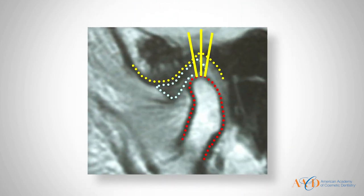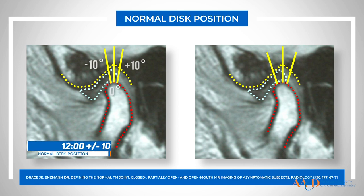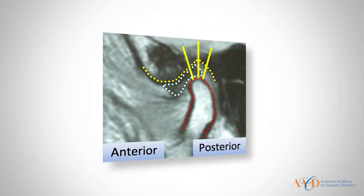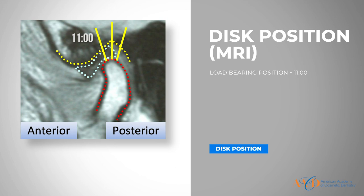Now, we talk about normal disc position. When MRIs came out in the late 80s and early 90s, the discussion was: what's normal disc position? A paper came out that talked about normal disc position being 12 o'clock, plus or minus 10 degrees. Seven years later, another paper came out and talked about normal disc position being 12 o'clock, plus or minus 30 degrees. When we have that much variation, what we really realize is that we didn't know what normal was. Today, thankfully, we've changed the way we look at disc position. In 2012, Provenzano wrote an article that talked about disc position really being analyzed by the load-bearing capability of the disc. Normally that's going to be about the 11 o'clock position on a clock face, which is going to put the posterior attachment at about the 1 o'clock position.